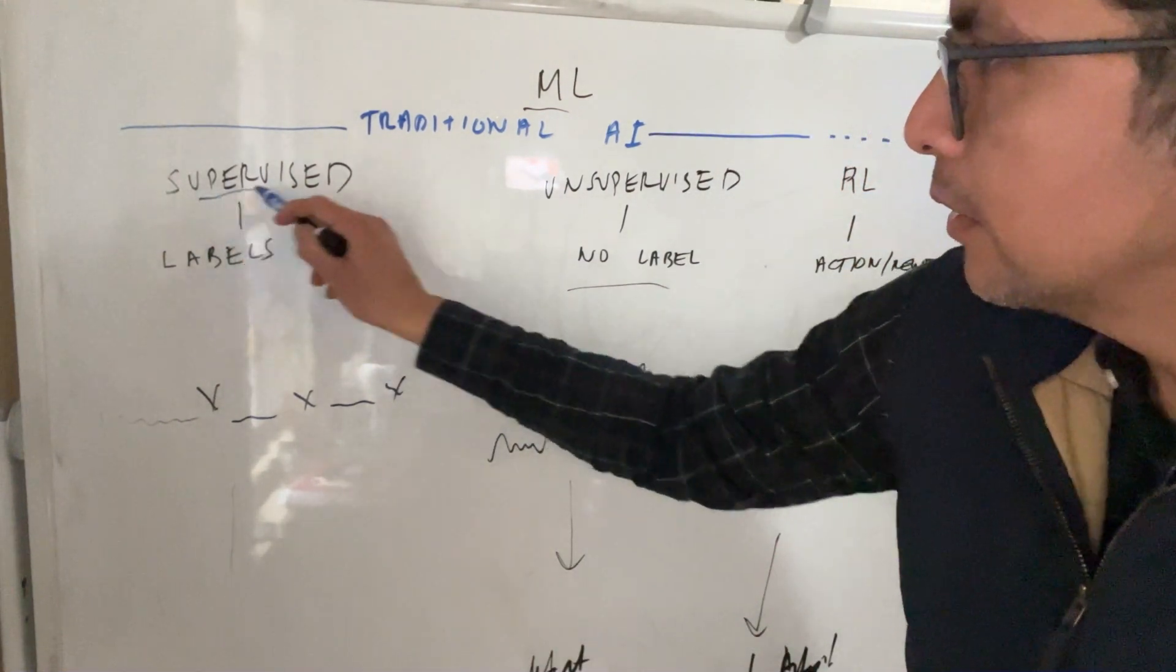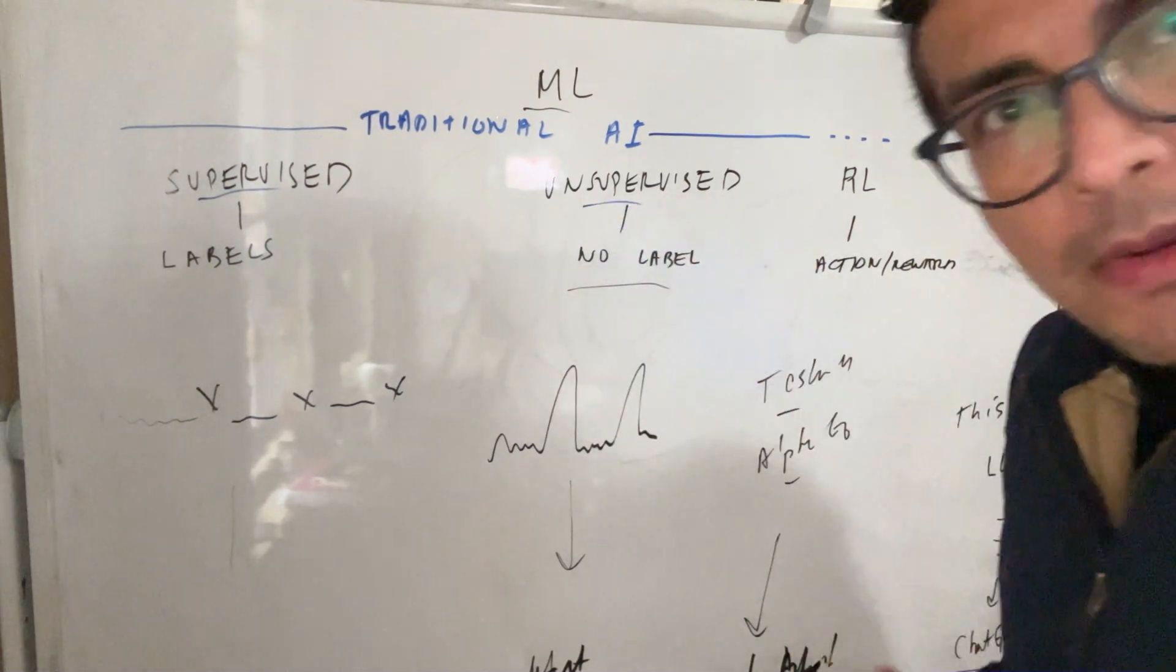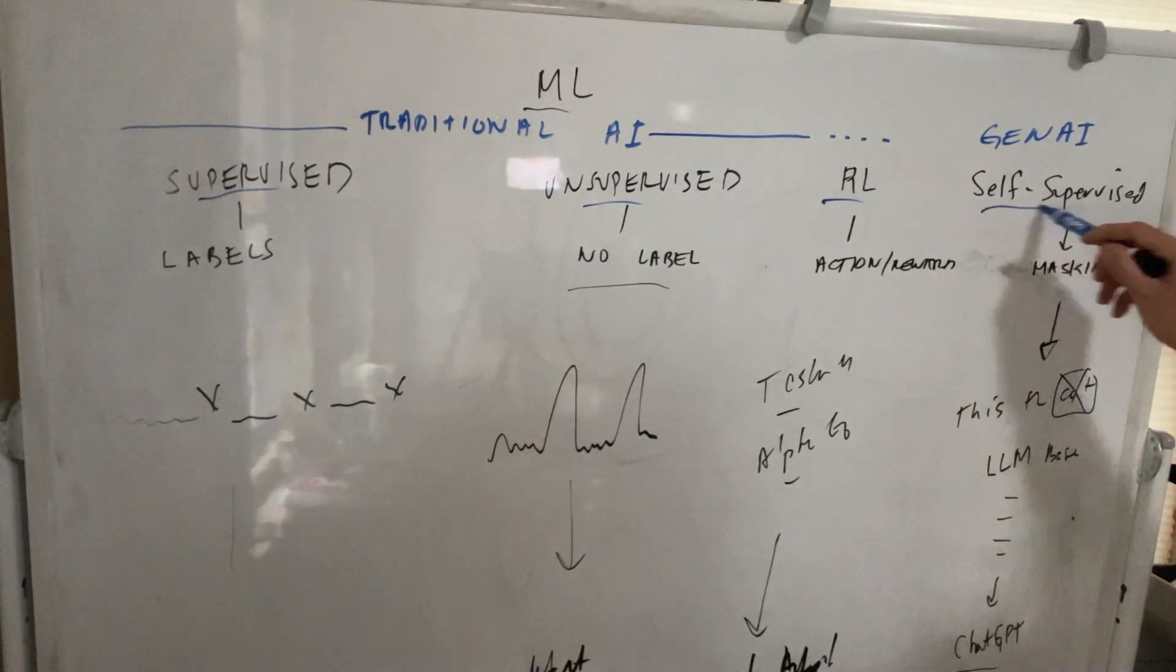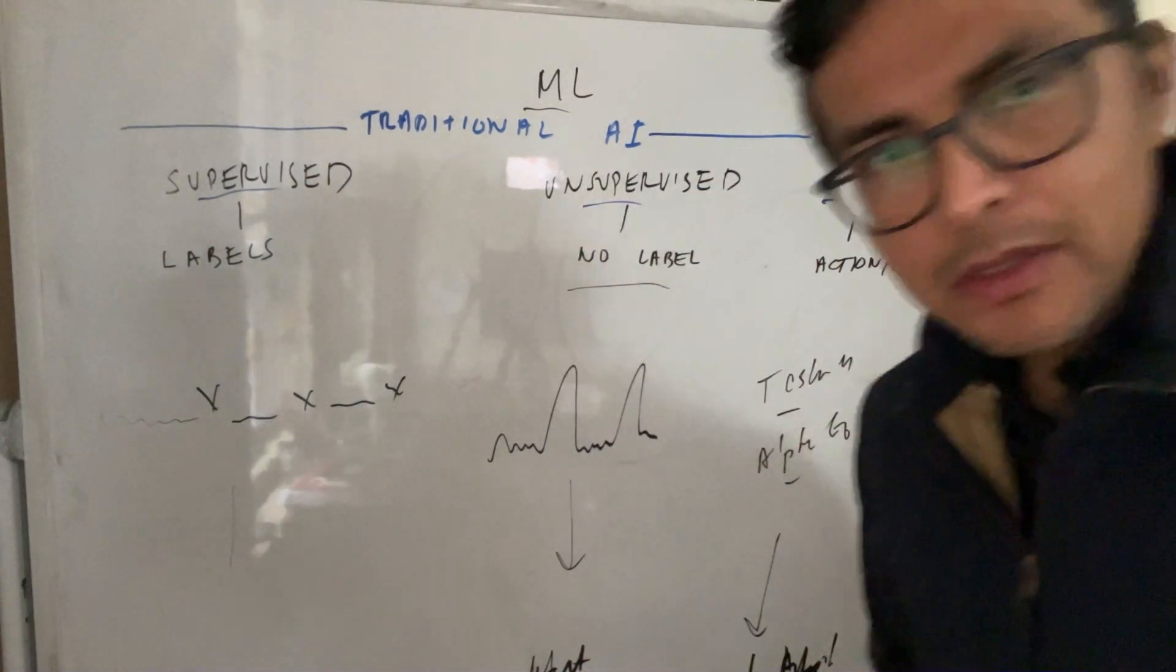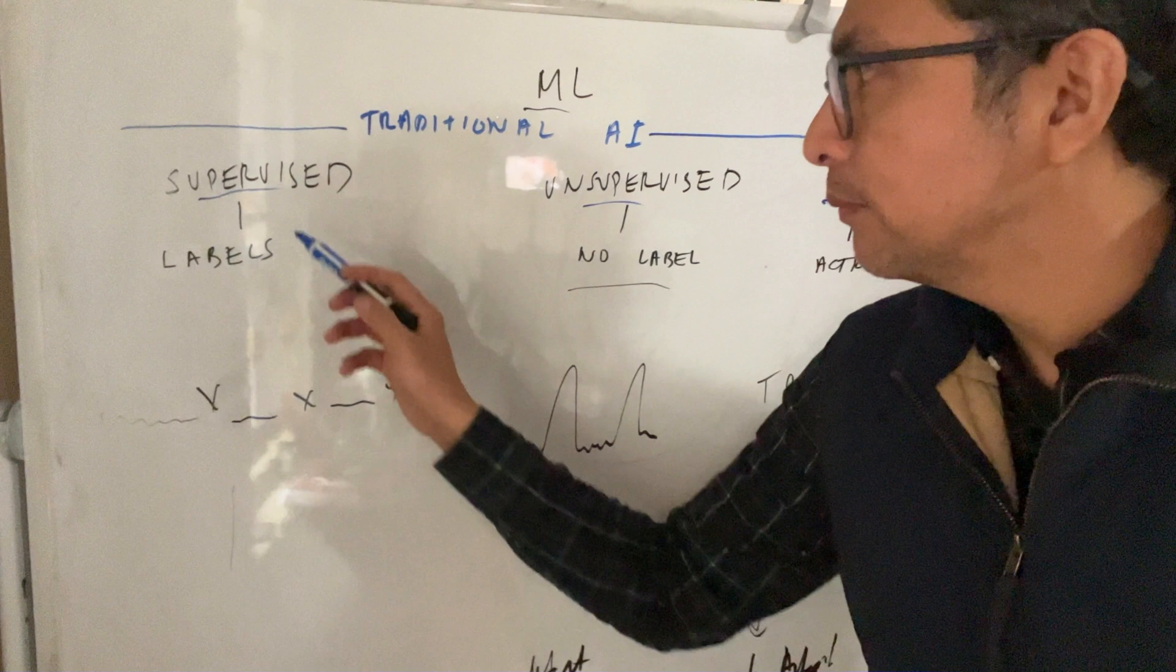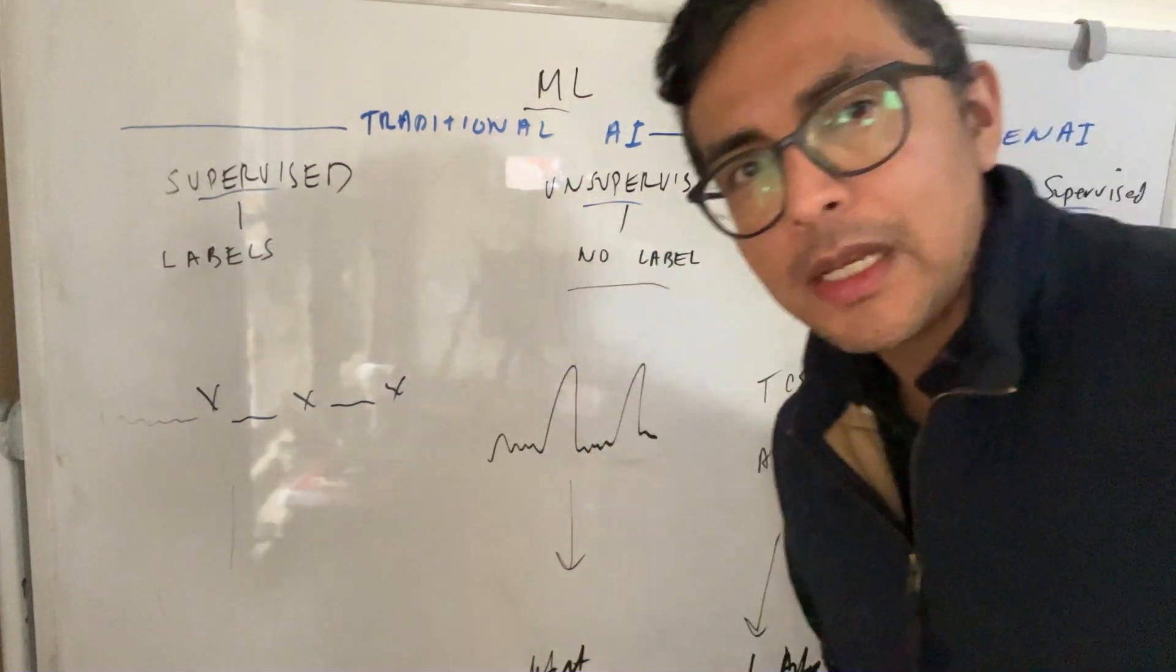Here we have supervised, unsupervised, reinforcement learning, and self-supervised. The traditional AI methods that have been around for a while, these are supervised and unsupervised methods.